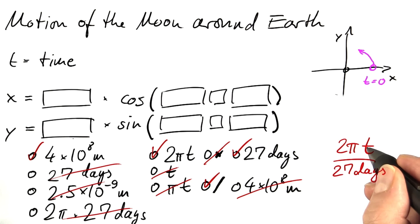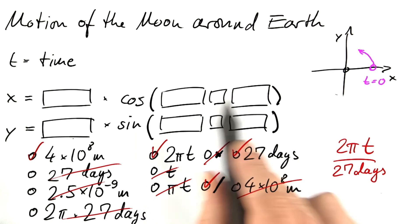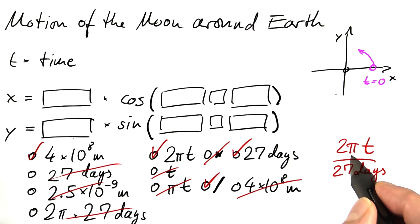As t advances by one period, this ratio advances by 2π. But that's precisely what we need for cosine and sine. The angle has to advance by 2π. 360 degrees. One full revolution.